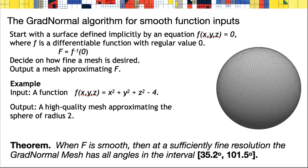Once we decide how fine the mesh that we desire is, the GradNormal algorithm will output a mesh approximating the surface f. If we put in the function x squared plus y squared plus z squared minus 4, then the output will be a high quality mesh approximating the sphere of radius 2, like the one shown at right.